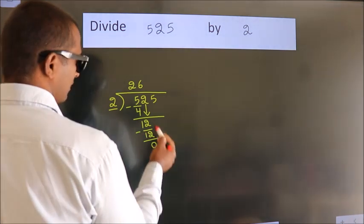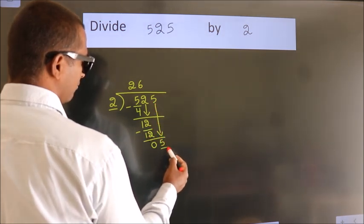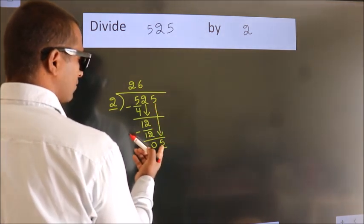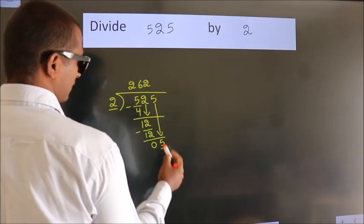After this, bring down the beside number. So, 5 down. So, 5. A number close to 5 in 2 table is 2 2s, 4.